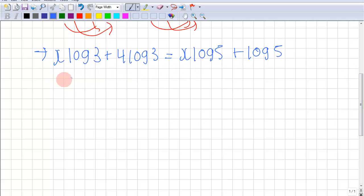Put the x's together. So it's x log 3 minus x log 5 is equal to log 5 minus 4 log 3.